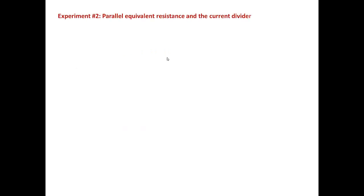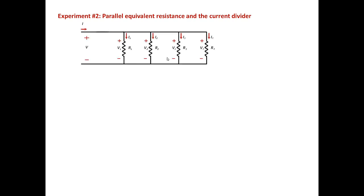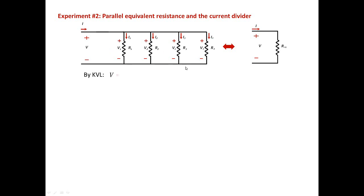The second experiment deals with parallel equivalent resistance and the current divider technique. We have four resistors connected in parallel with a voltage V across them and a total current flowing through. We want to find R-equivalent — one resistance to replace those four parallel resistors — such that the voltage and total current remain the same. By KVL, the voltage across all parallel resistors is equal: V equals V1 equals V2 equals V3 equals V4.